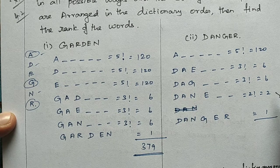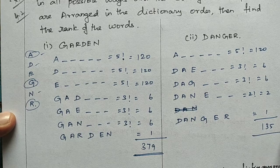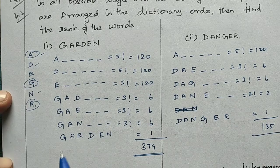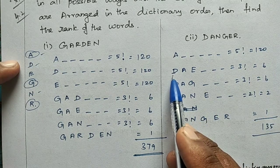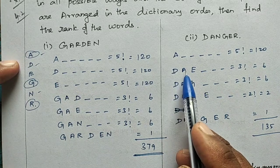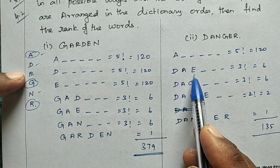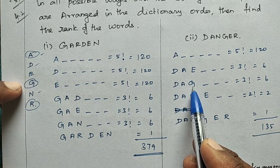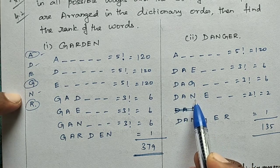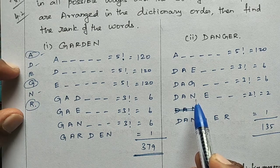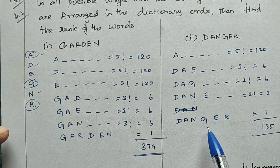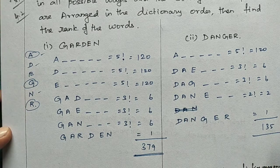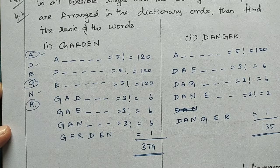Adding all counts: 120 (starting with A) + 2 (DAE) + 2 (DAG) + 2 (DAN with E first) + 2 factorial = 2 (DANE arrangements) + 1 (DANG with E,R) + 1 (DANGER itself). Total = 120 + 12 + 2 + 1 = 135. The rank of the word DANGER is 135.